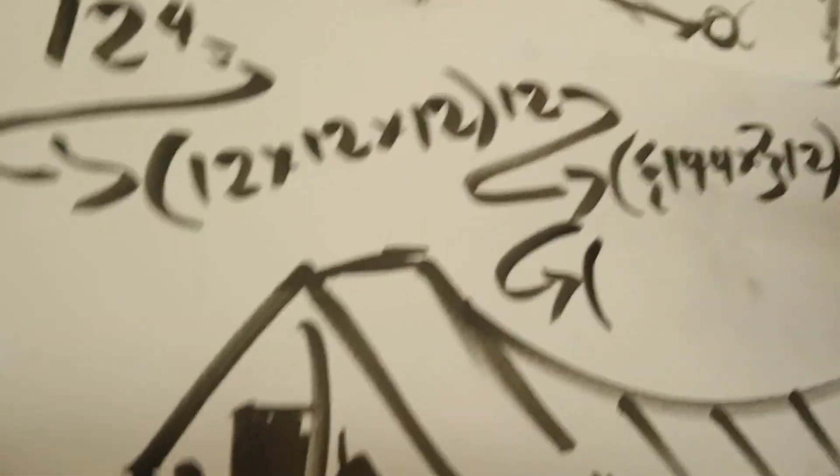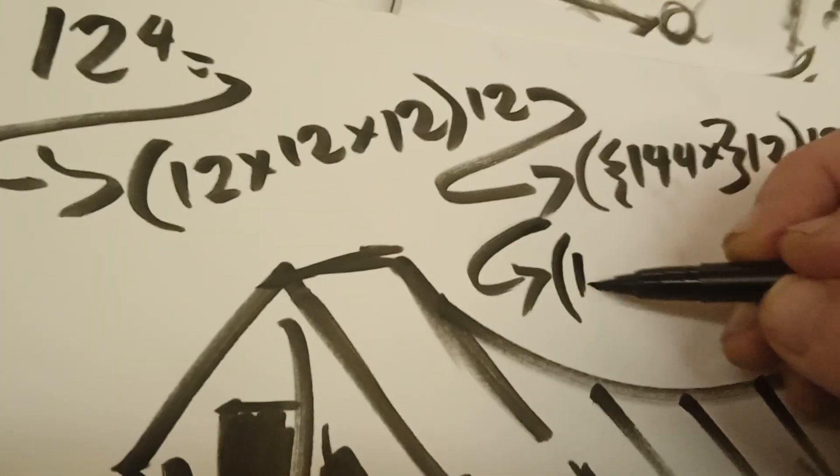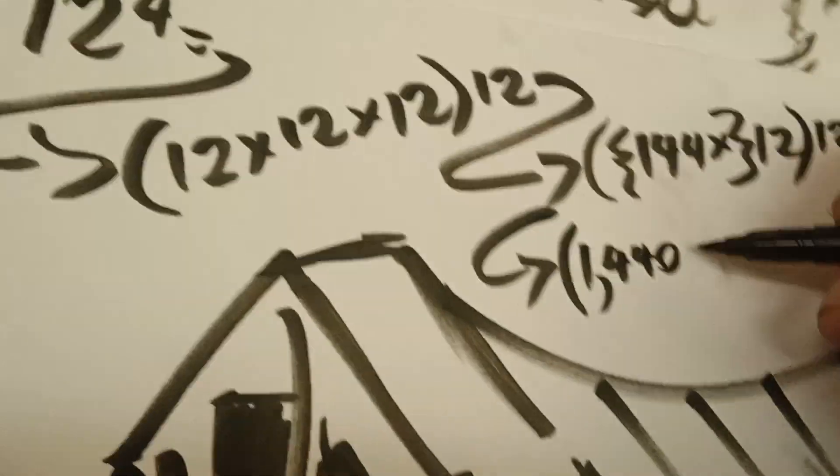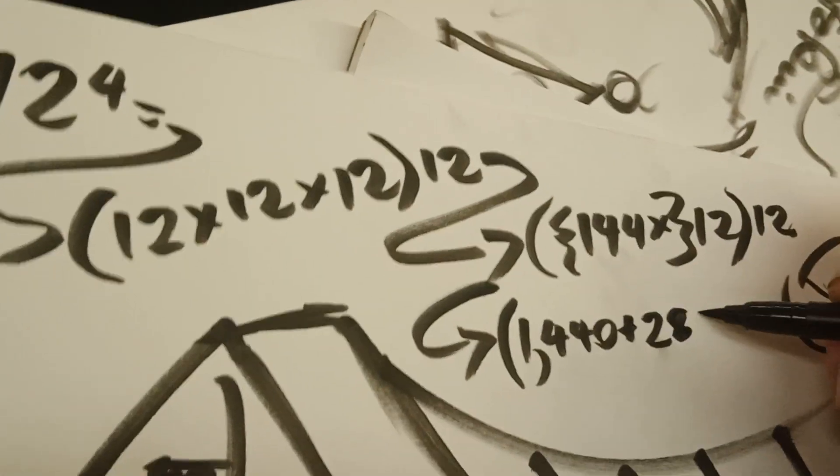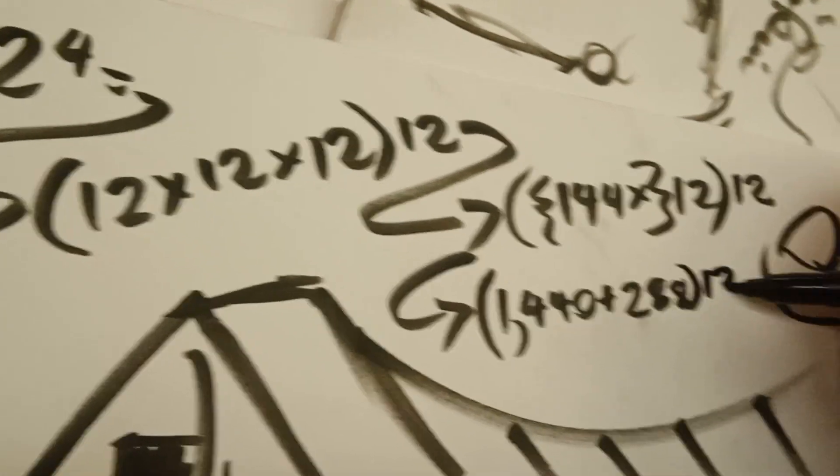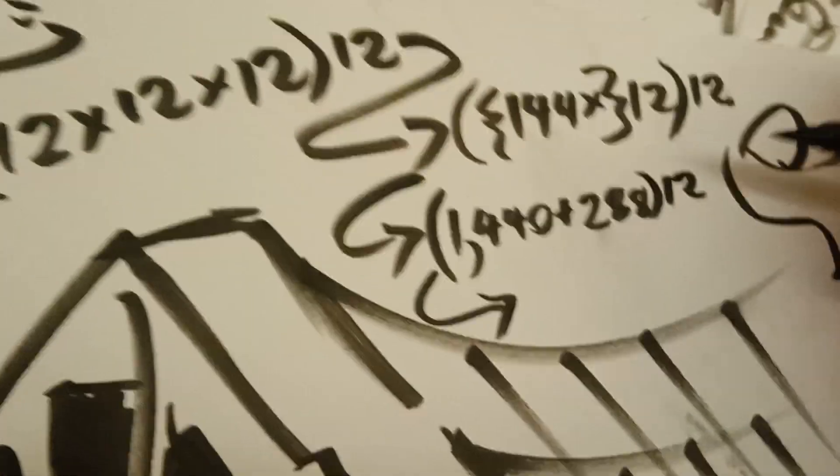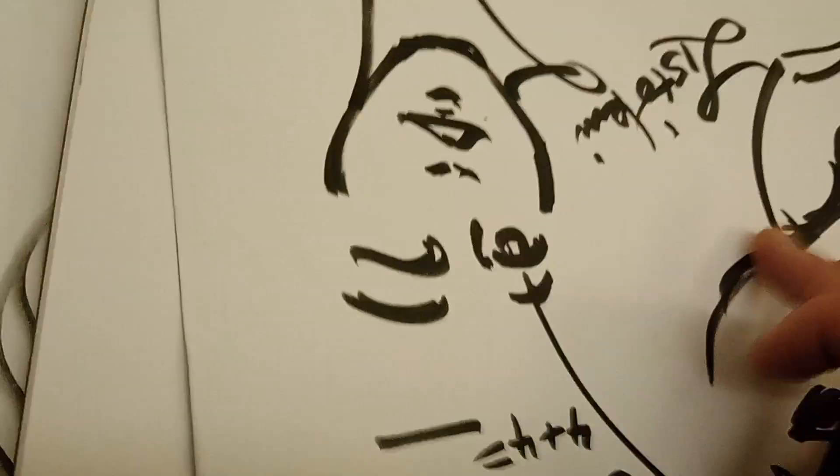So next we say 1,440 plus 288 times 12. Next we say, we're going to turn this over to be continued on the other side of this page.